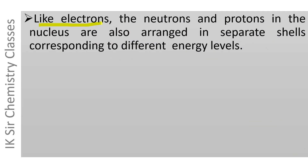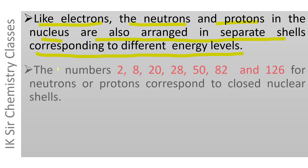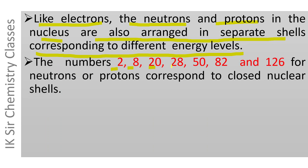Like electrons, the neutrons and protons in the nucleus are also arranged in separate shells corresponding to different energy levels. In the nucleus, the numbers 2, 8, 20, 28, 50, 82, and 126 of neutrons or protons correspond to closed nuclear shells.